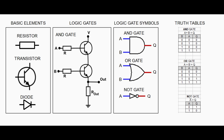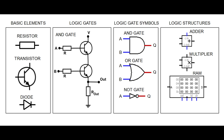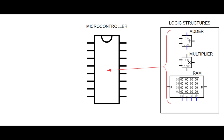Boolean Algebra is very useful in describing and simplifying complex digital circuits. Using these logic gates, we can create more complex structures capable of adding, subtracting, multiplying and even storing digital information. These are the types of structures that are inside a microcontroller, and they can be controlled by using something called a program.